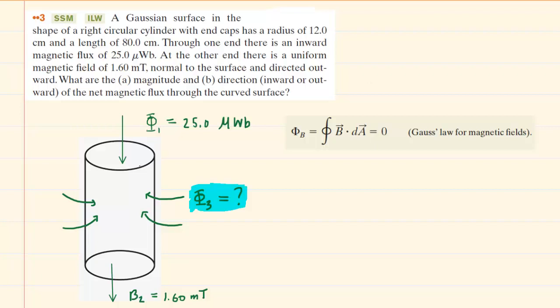We have drawn a cylindrically shaped Gaussian surface, as indicated in the question, and we also have drawn three magnetic fluxes or magnetic fields, depending on what the question was describing.